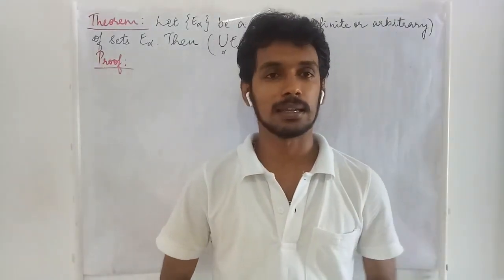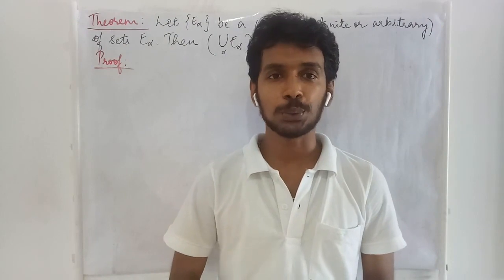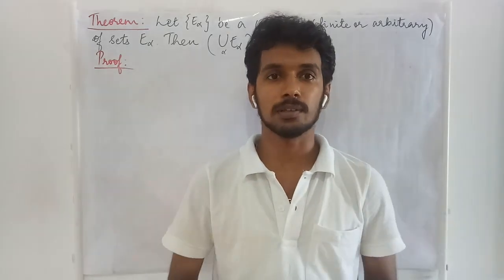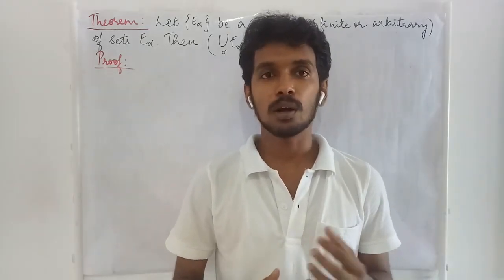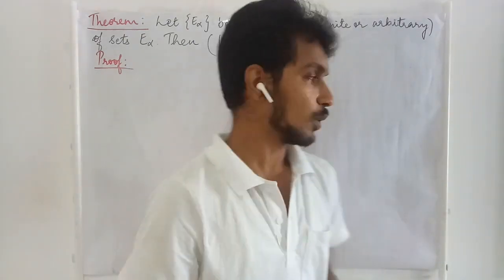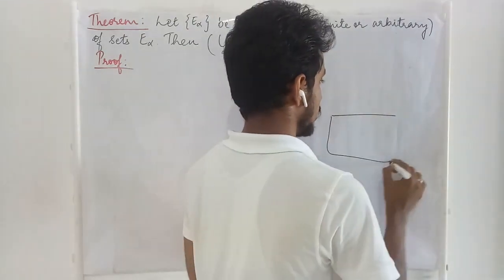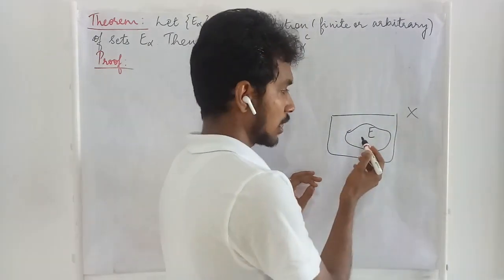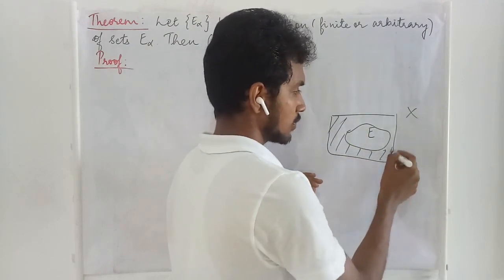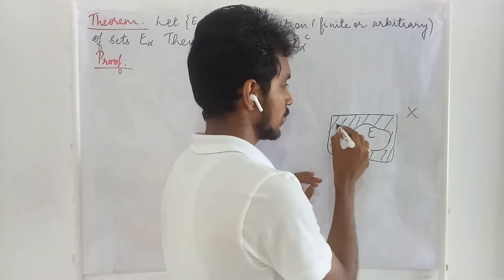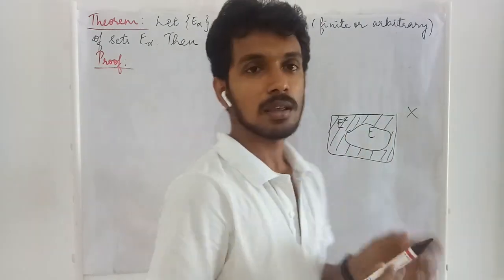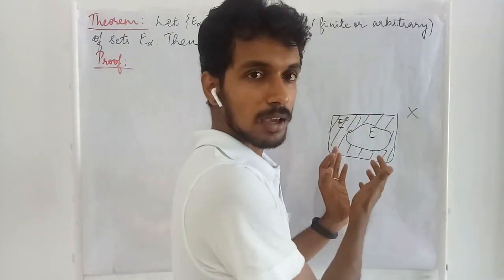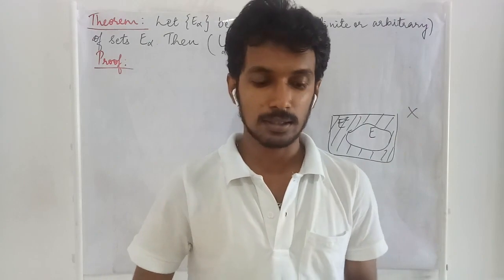Welcome to the lecture series on real analysis. In this video, we are primarily going to prove the relation between a set and the complement of a set. Let us recall what we mean by a complement of a set. Suppose we have this to be our metric space X and let this be the set E. All those points which are not members of E — that is, the points of the metric space which are not present in E — are called the complement of the set.